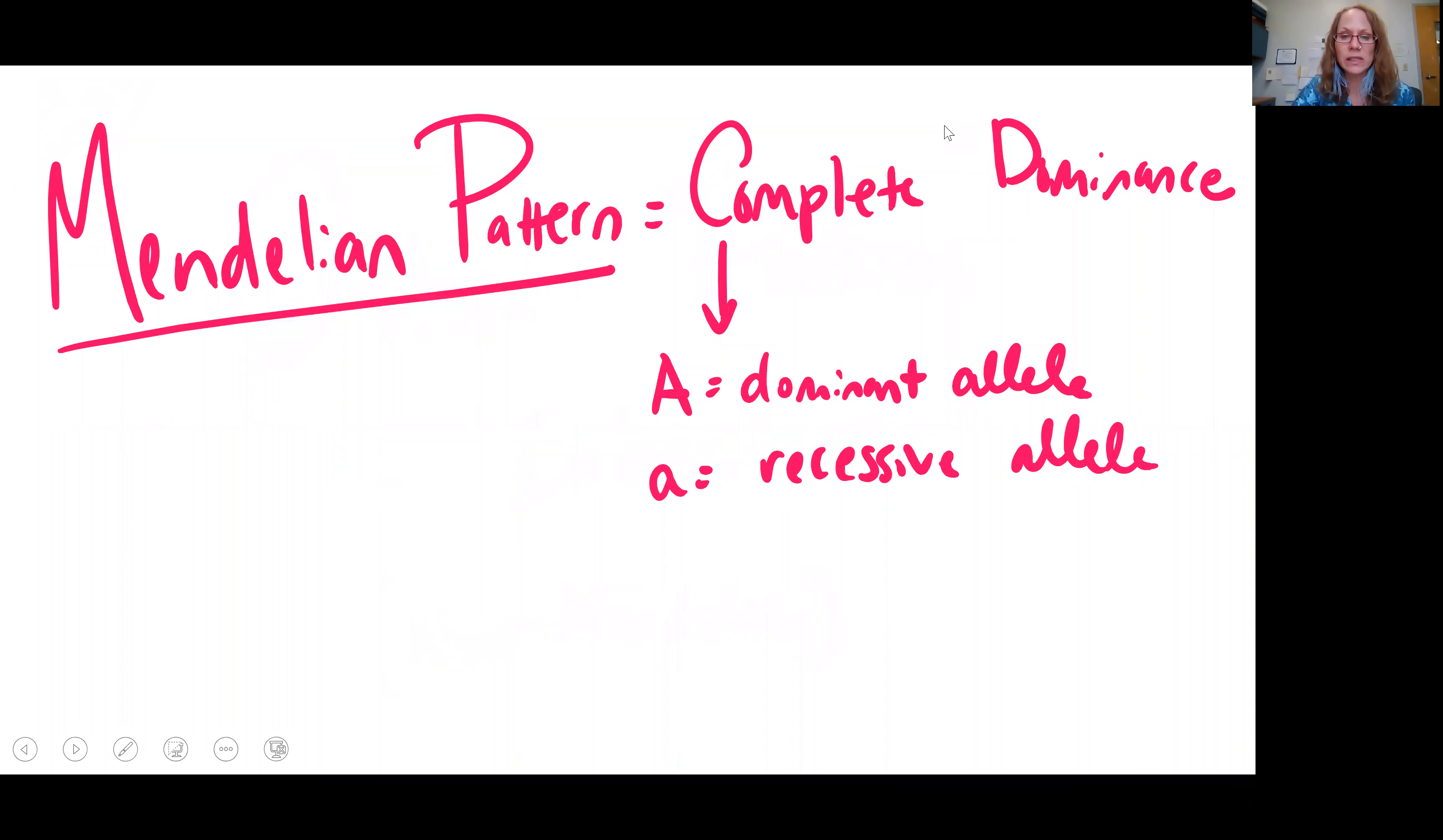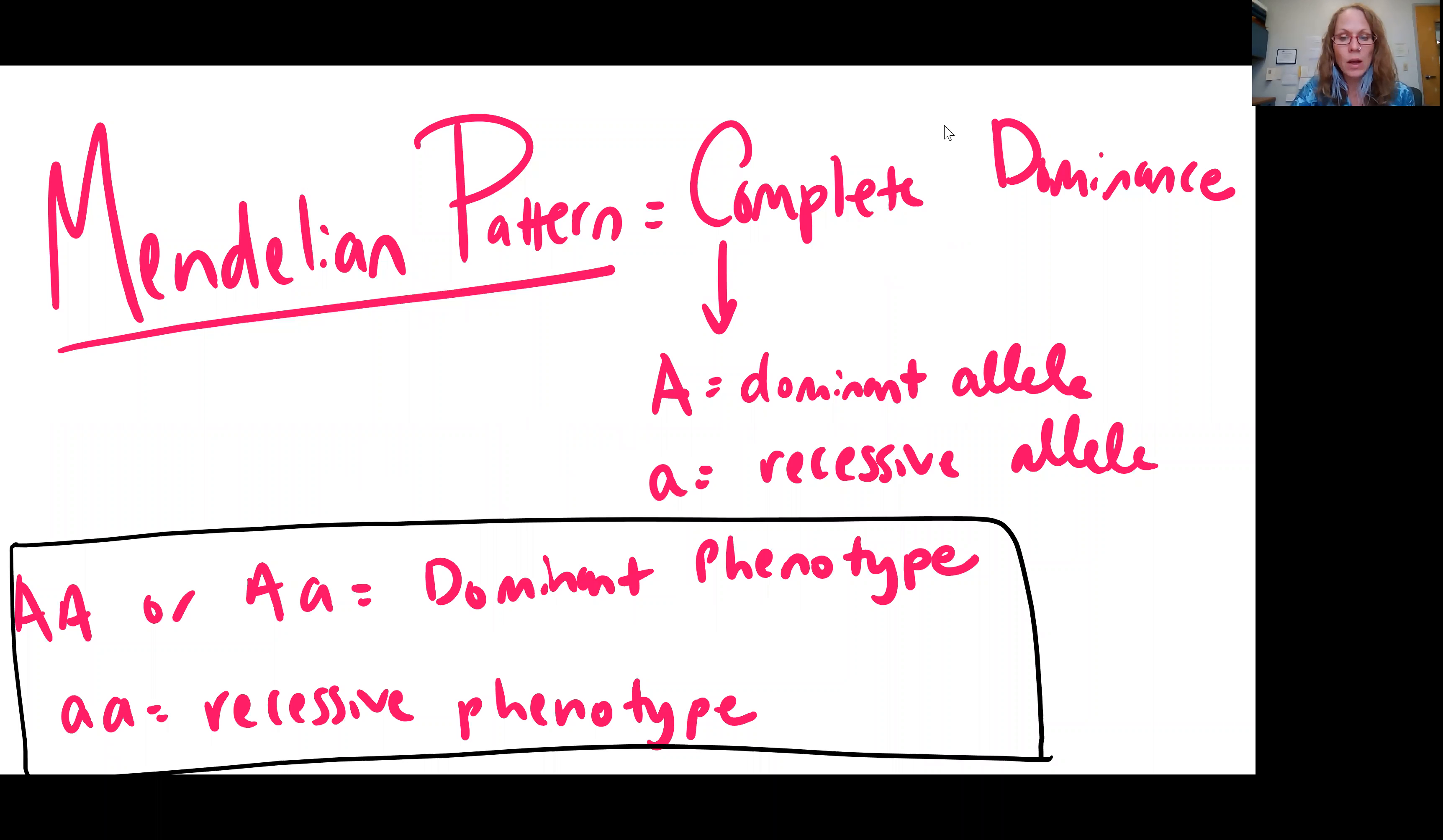Let's revisit our Mendelian pattern of inheritance so we can more easily identify the differences. In Mendelian genetics, we described complete dominance. So you inherited two alleles. You could inherit a combination of a dominant allele or a recessive allele. So we said if you were homozygous dominant or heterozygous, so that'd be big A, big A or big A, little a, you would have the dominant phenotype. So the physical expression, the appearance would be the same even though you have a different genotype there.